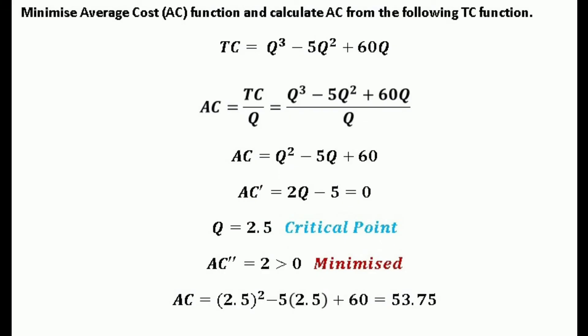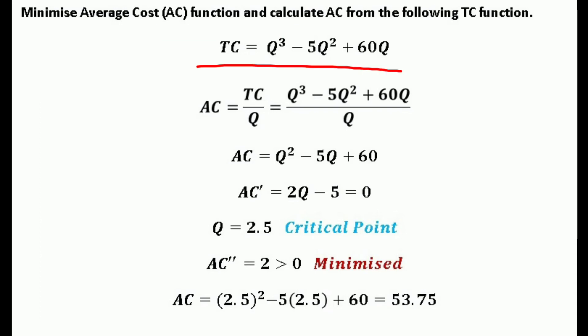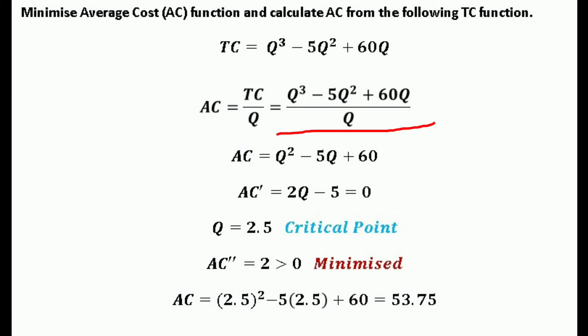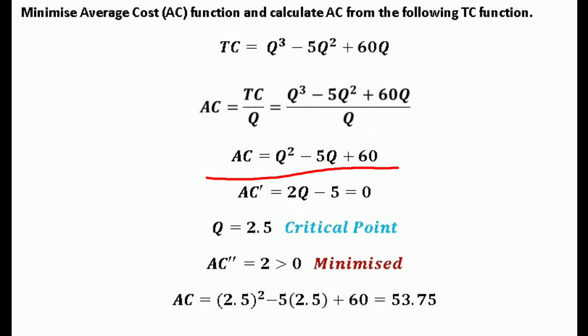Similarly, we have another question: minimize the average cost function and calculate the average cost from the given total cost function TC = q³ - 5q² + 60q. To find the average cost, divide the total cost by output q: AC = (q³ - 5q² + 60q) / q = q² - 5q + 60.